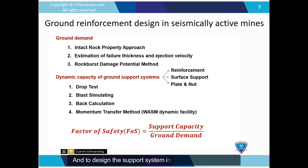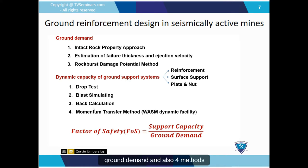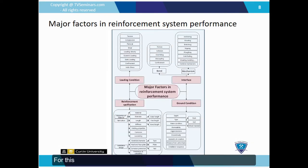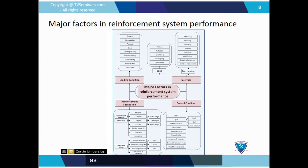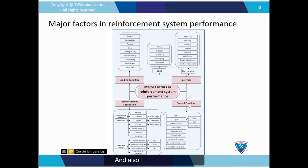To design the support system in seismically active mines, we need to define the ground demand and also the support capacity. As you can see here, three methods are presented for ground demand determination and four methods to determine the support capacity, which we will discuss in the coming slides. We have also collected the main factors in reinforcement system performance, such as loading conditions, interfaces like resin and cement grout, reinforcement specifications, material of the reinforcement, and ground conditions.